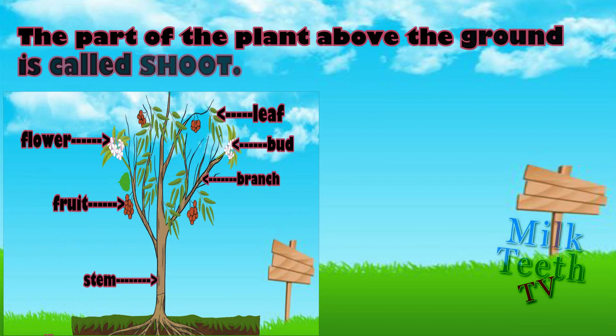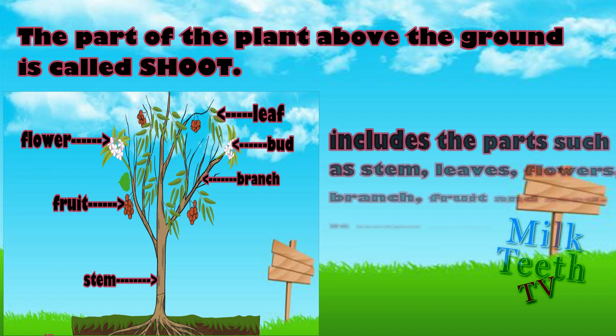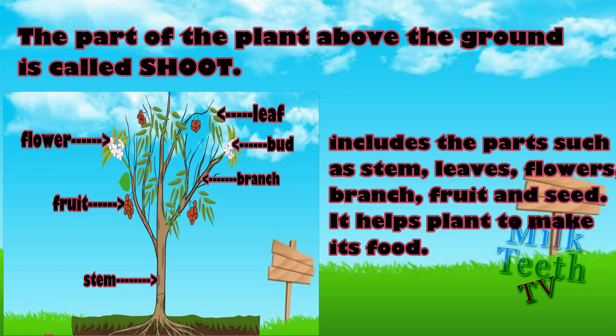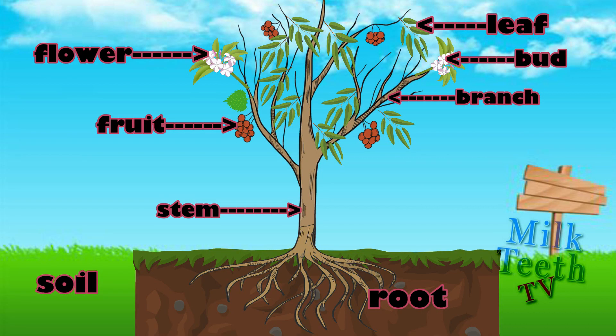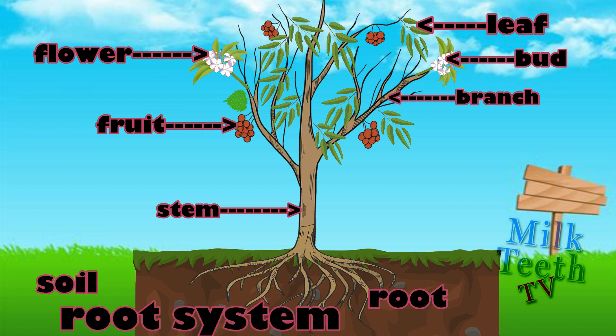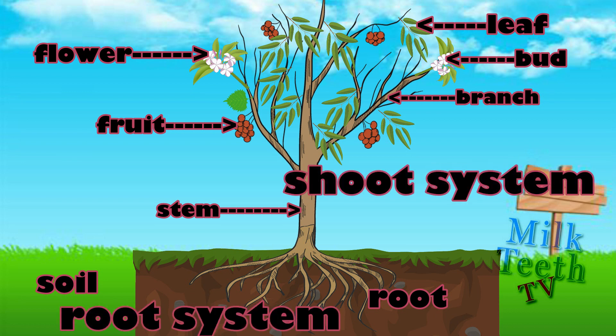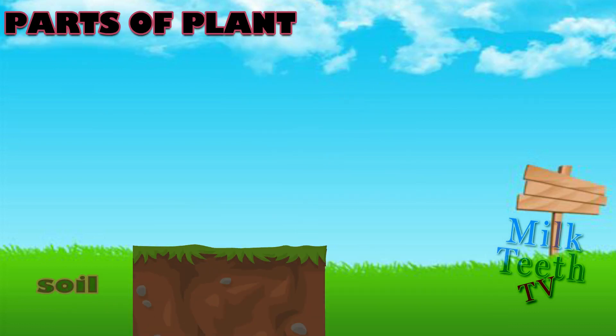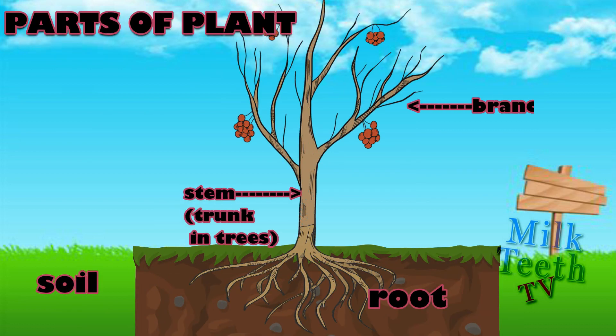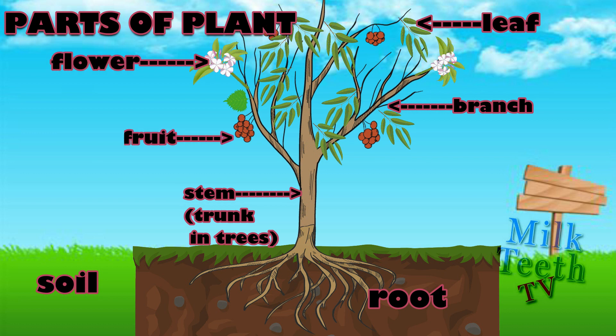The part of the plant above the ground is called shoot. It includes parts such as stem, leaves, flowers, branch, fruit and seed. It helps the plant to make its food and also reproduce with the help of flowers and seeds. Broadly, the root system and the shoot system are the two main parts of the plant. Now let us understand the individual parts one by one.